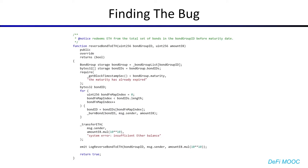However, this third function here transfers ETH to the sender. Taking a closer look, we see that this function will take a bond group ID and some amount of bond tokens, and then it will first ensure that the bond has already matured. And then if it has matured, it will burn the requested amount of bond tokens from each bond in the bond group, and then finally return some Ether to you.